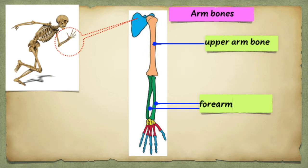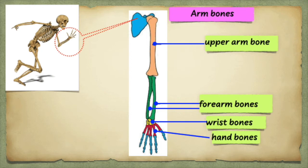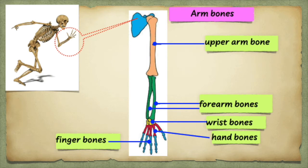What are the parts of your arm? You have the upper arm and the forearm. You also have the wrist, the hand, and the fingers. Look at the arm bones: see the upper arm bone, see the forearm bones, see the wrist bones, see the hand bones, see the finger bones. During play, always take care of all your bones.